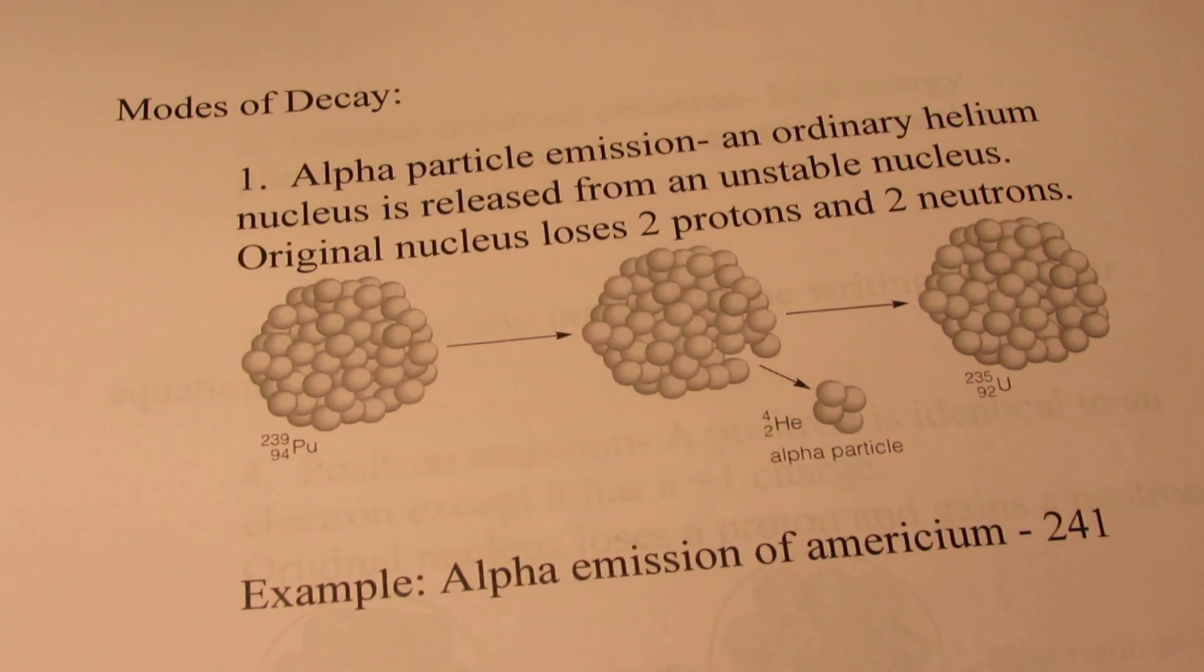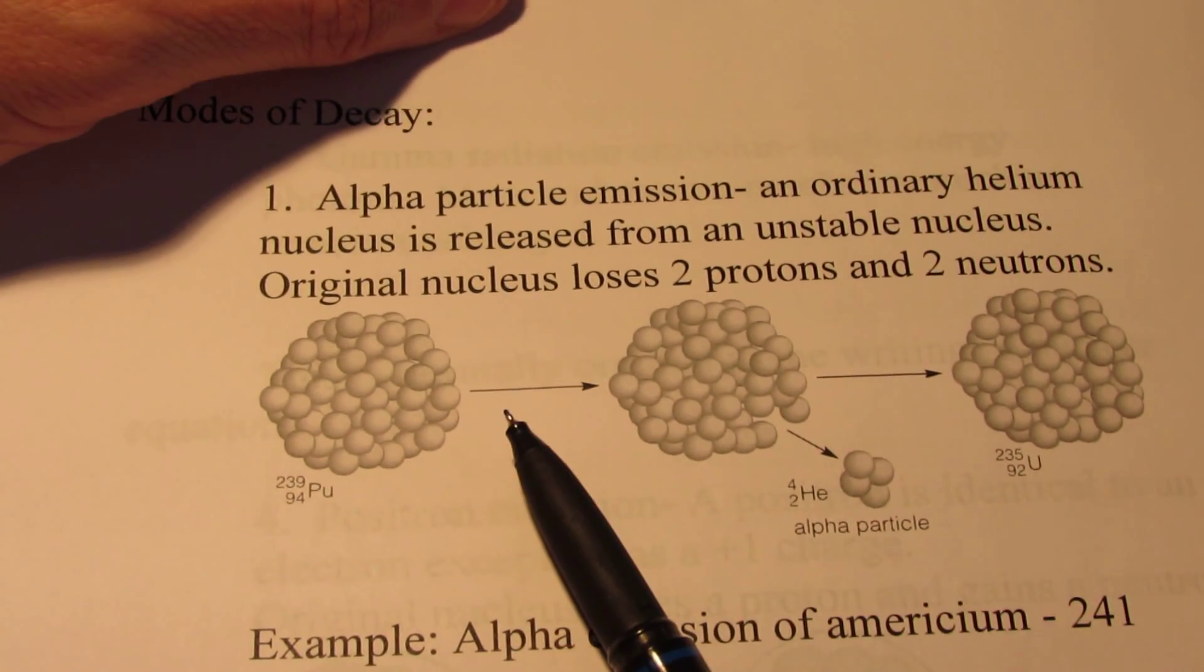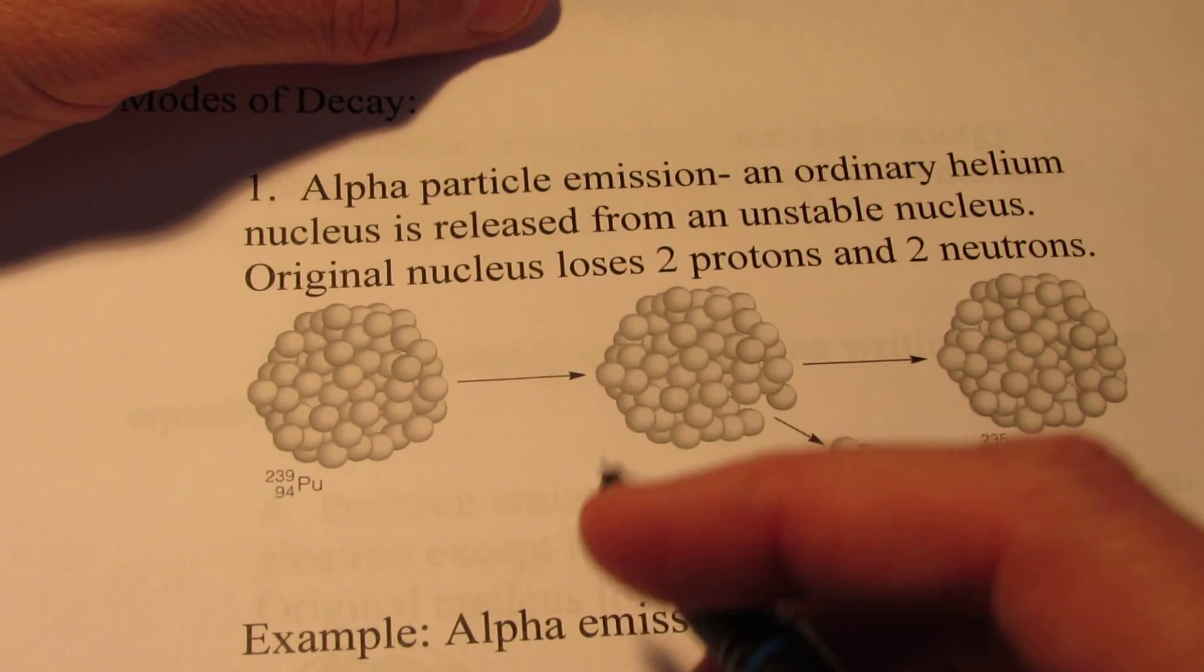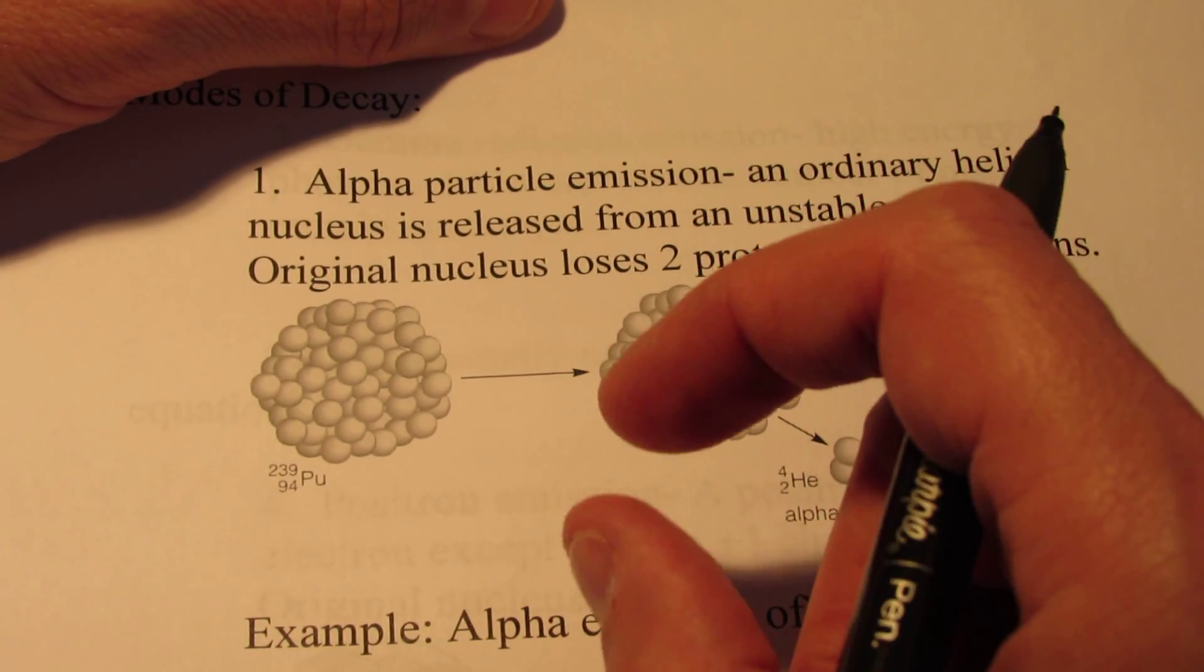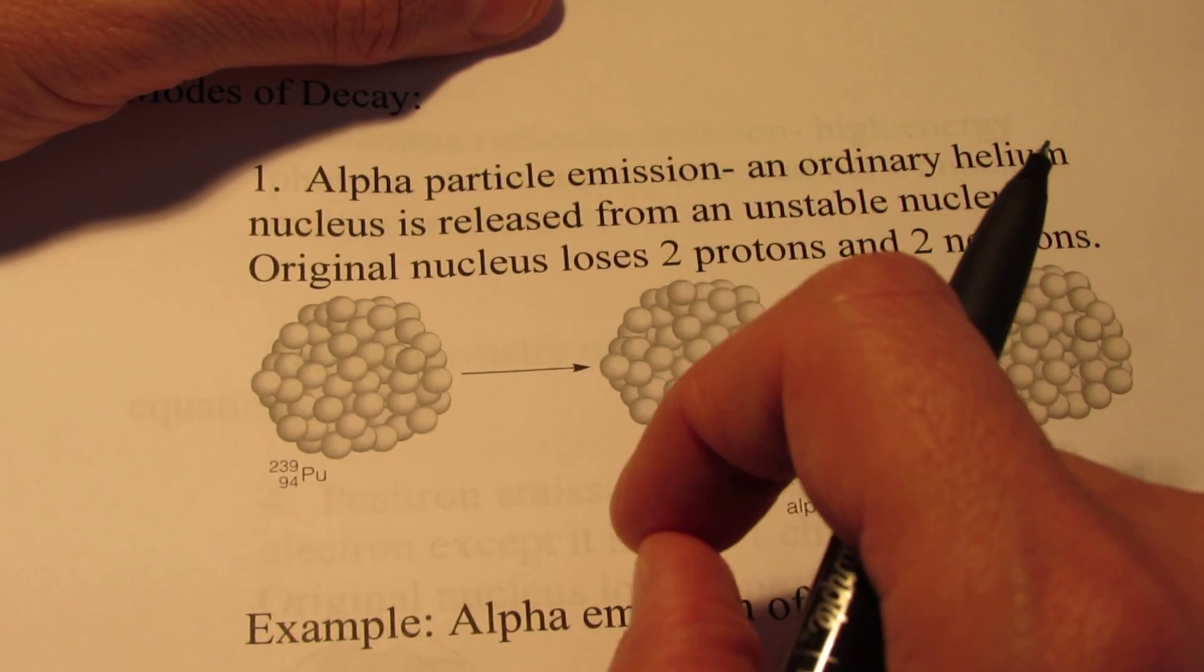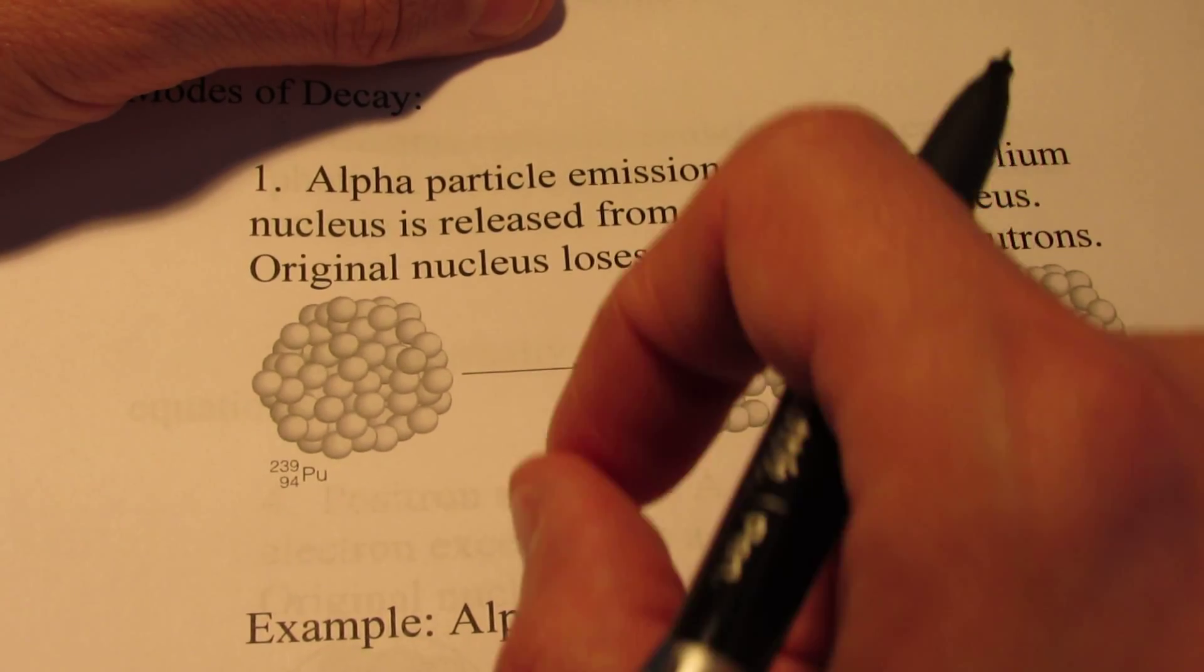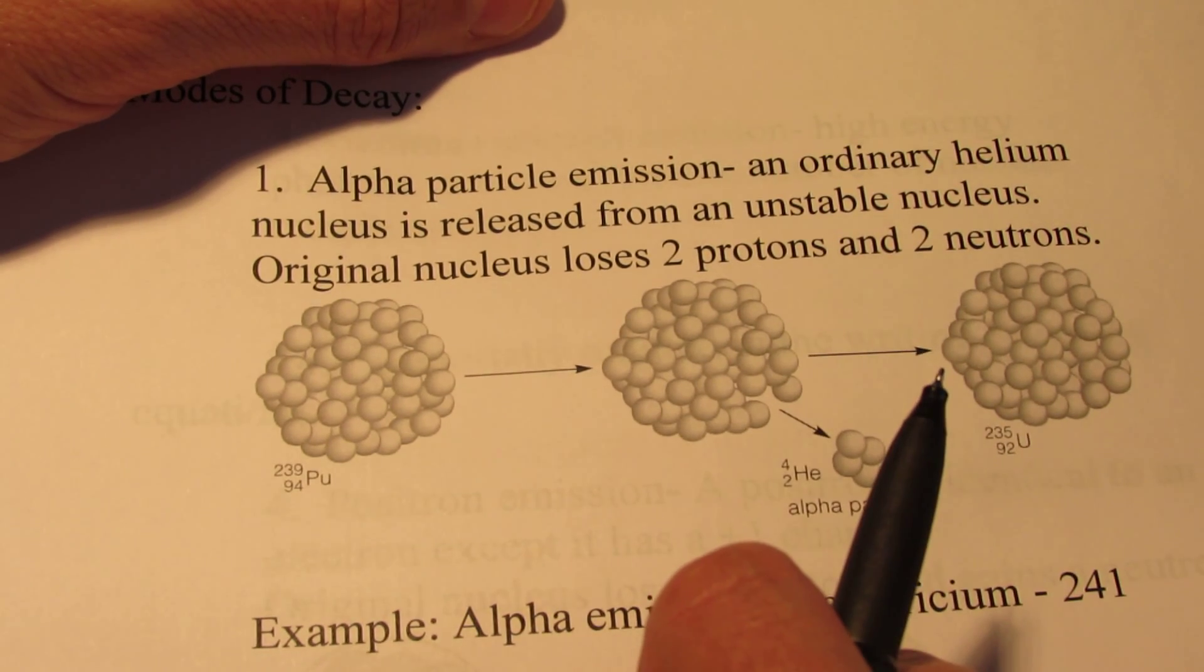Today we're going to talk about where those particles come from and essentially what happens when an atom is radioactive and has a nucleus that's unstable. If you can imagine trying to pack a bunch of protons really close to each other in a nucleus of an atom, those positively charged particles want to break apart and repel each other.